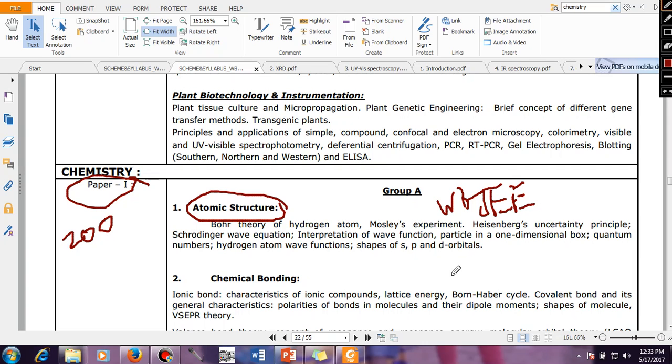I'll concentrate on it and make videos such a way. Then you have chemical bonding. These two portions, all the things you have covered in your Class 12 itself. If you go through your Class 12 book, then you can have a good hold over these two topics - atomic structure and chemical bonding.